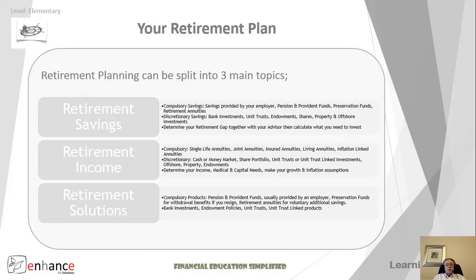Retirement planning can be split into three main topics. First, there's retirement savings — the phase you go through whilst working and building towards your retirement. The different types include compulsory savings traditionally provided by your employer: pension and provident funds, preservation funds and retirement annuities. Then there's discretionary savings: things like bank investments, unit trusts, endowment policies, shares, property and offshore investments. You need to determine your retirement gap together with your advisor, then calculate what you need to invest. We'll talk about the retirement gap in the retirement planning module of this course.